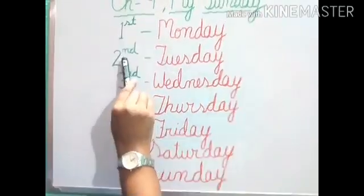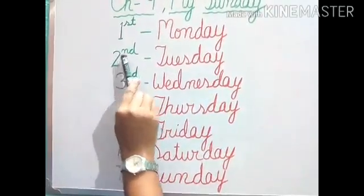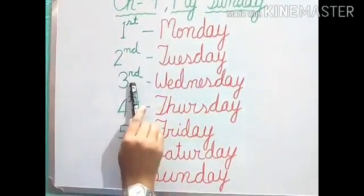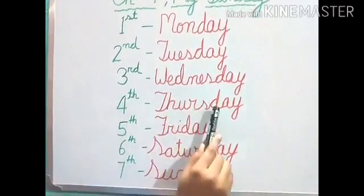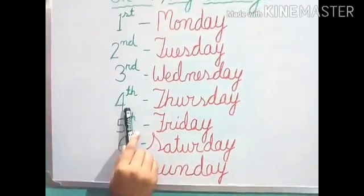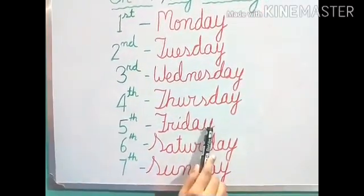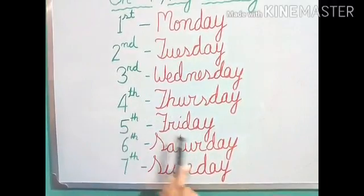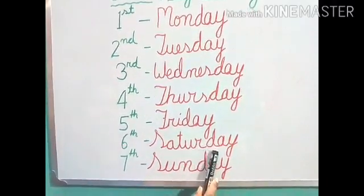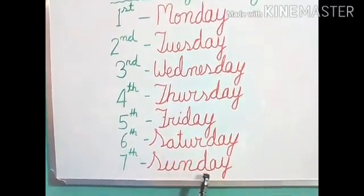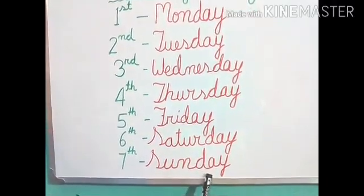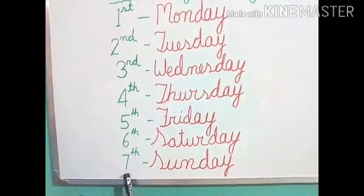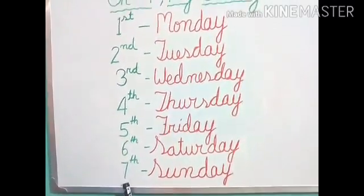So Monday is the first day of the week, Tuesday is the second day of the week, Wednesday is the third day of the week, Thursday is the fourth day of the week, Friday is the fifth day of the week, Saturday is the sixth day of the week, and Sunday is the seventh day of the week.